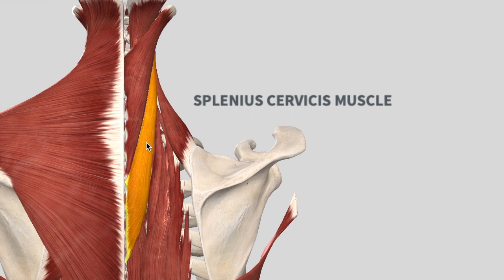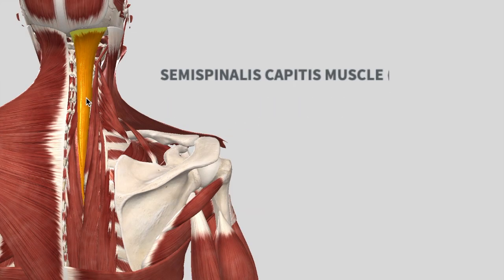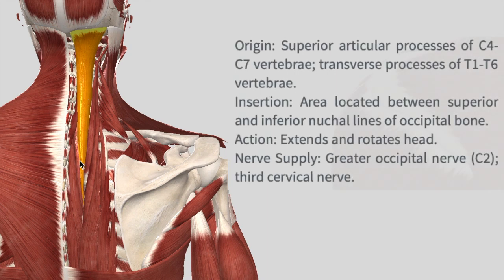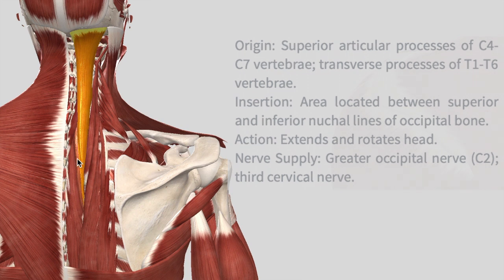Moving on, the next deep muscle is the semispinalis capitis muscle. This is very important because the origin and insertion really matter and it's usually involved in hyperextension of the neck. The origin is from C4 to C7 vertebrae or T1 to T6, and it inserts into the inferior nuchal line of the occipital bone.